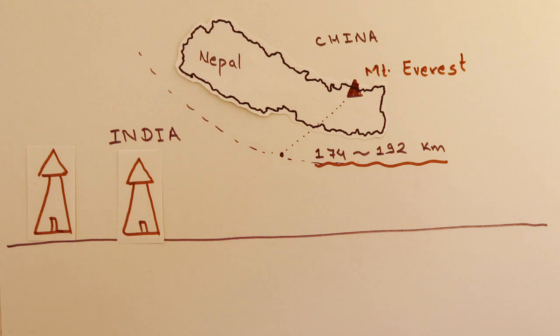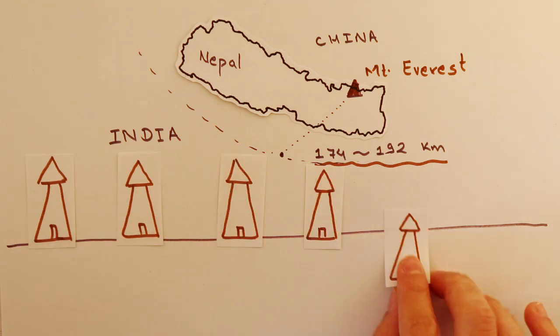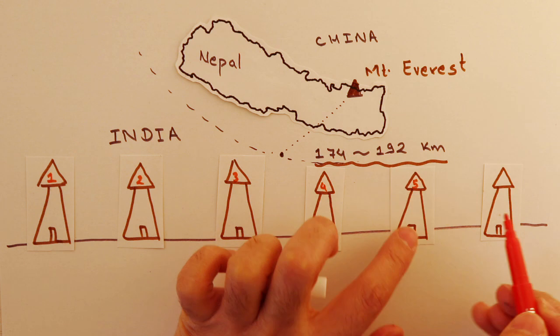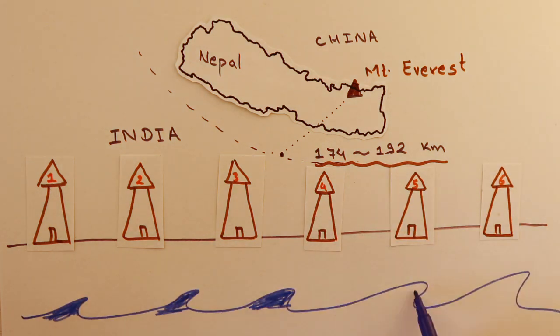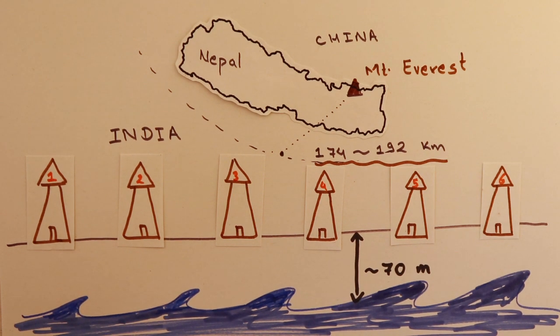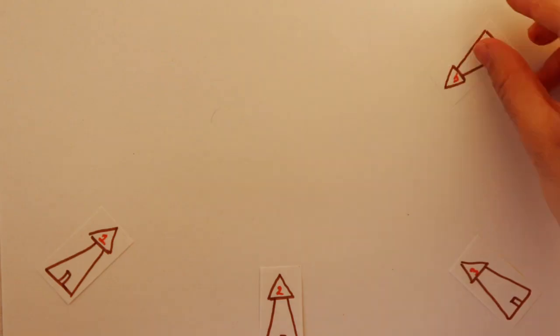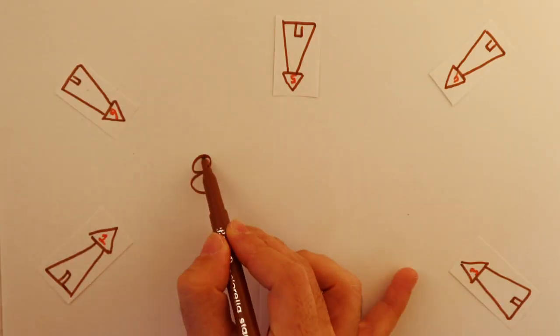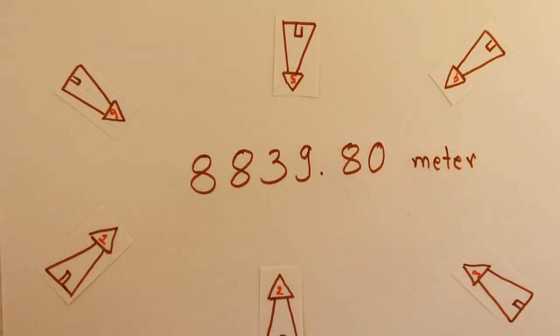An observational tower was established at each location, where his team members performed rigorous measurements for years. Those locations were at the height of 70 meters from the sea level. There are criticisms and several arguments on the value of refractive index used by him in order to minimize the error introduced by refraction. But I would simply like to admire his drive in getting those observations and computing the data. The mean height computed from all these observations was 8839.80 meters and that was the height of Mount Everest known for the first time.